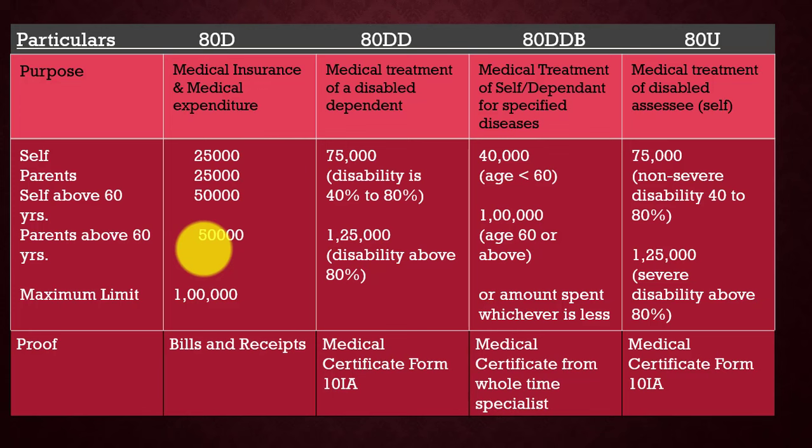Sections 80D, 80DD, and 80DDB allow claims for self, parents, dependent brother and sister, or children. The word 'dependent' is very important here — if your brother, sister, or children are earning, you cannot claim for them. In Section 80D, there is no specific disease required. If your parents are senior citizens and paying for their medical treatment — such as surgery, hospitalization, or any type of disease — you can claim a maximum limit of ₹50,000. Proof must be submitted in online/banking mode; cash will not be allowed.